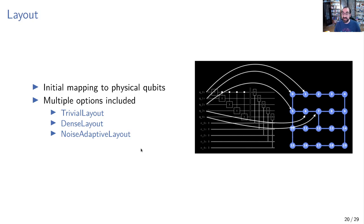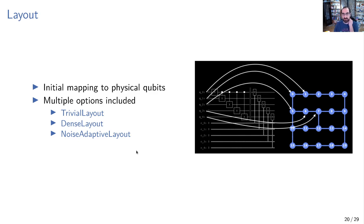Moving on, let's talk about layout. Layout is actually deceptively important. When we have a virtual circuit with qubits Q1, Q2, Q3, Q4, we have to figure out how to map those onto the physical device. That initial qubit selection from virtual to physical can be really important — if we pick poorly, we have to start adding a lot of swap gates to make the circuit runnable. Out of the box we have three passes in Qiskit that do layout — there's actually a fourth one, SABRE layout, that I forgot to update on the slide — but we'll look at these three.